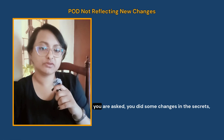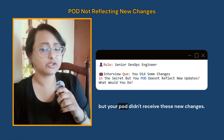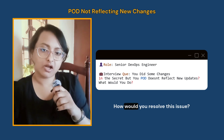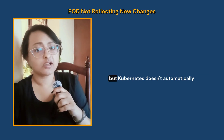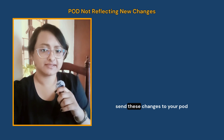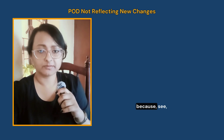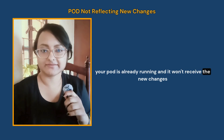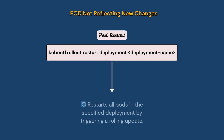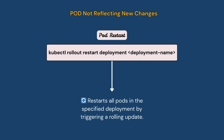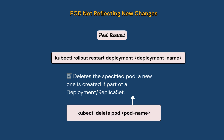In your DevOps interview you are asked: you made changes to a Secret but your pod didn't receive the new changes — how would you resolve this? When you update a Secret, Kubernetes doesn't automatically push those changes to already-running pods. The solution is a pod restart. You can do this with the kubectl rollout restart command, or you can delete the pod — it will then be recreated with the new configuration.